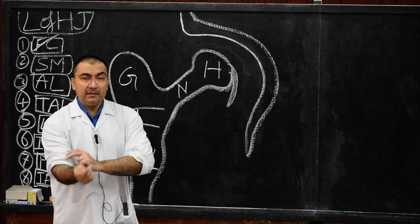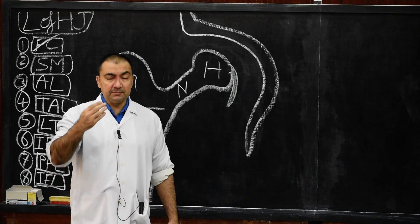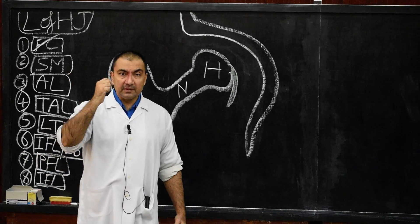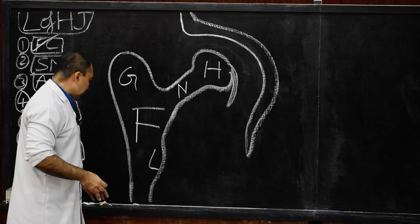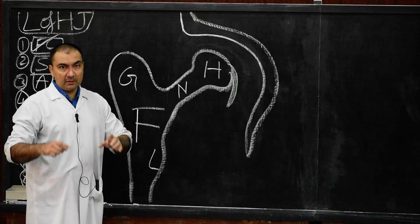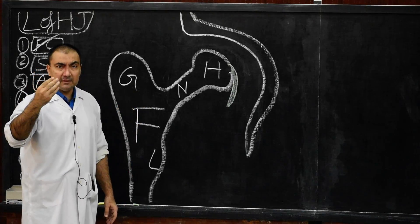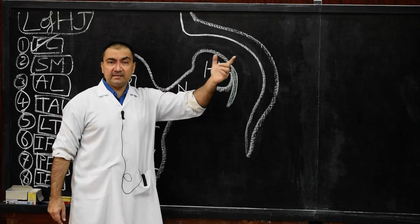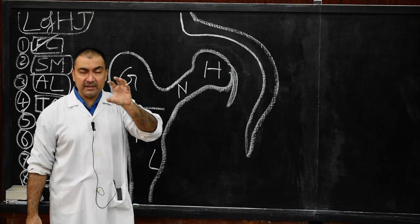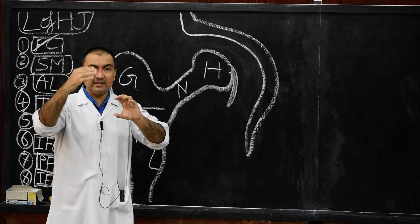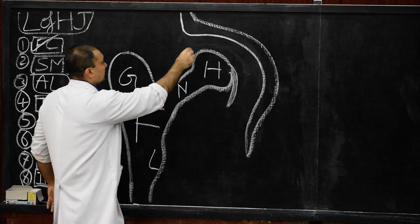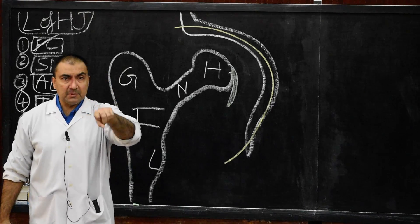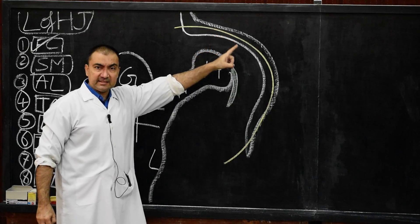The entire fibrous capsule will be taut in extension and relaxed in flexion of the hip joint — this is an important MCQ point. The fibrous capsule is attached at two ends: the upper end to the acetabular margin, and the lower end to the femur. The upper margin of fibrous capsule is attached on the acetabular margin 5 to 6 mm above the acetabular labrum.